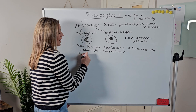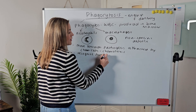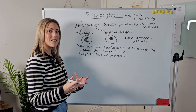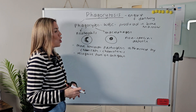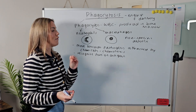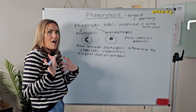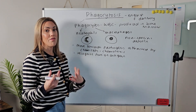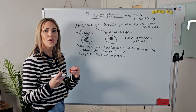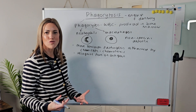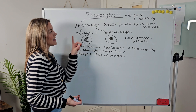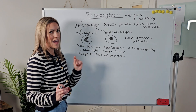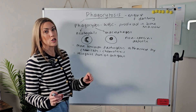Phagocytes can also recognize the foreign antigens on the surface of pathogens. An antigen is usually a protein or a glycoprotein on the surface of a cell. We have antigens on our own cells — they're called self-antigens. These pathogens have antigens on their surface which are foreign; they are non-self. They have a different tertiary structure, a different shape. The phagocyte is able to recognize that the antigens on the pathogens are foreign and non-self, and therefore that pathogen needs to be destroyed.